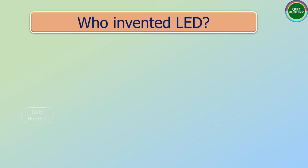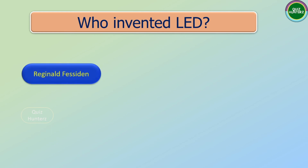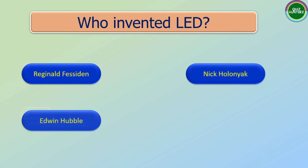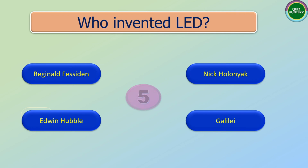Next question: Who invented LED? The options are: Regnard Fasiden, Nick Holonyak, Edwin Hubble, and Galileo. And the correct answer is Nick Holonyak.